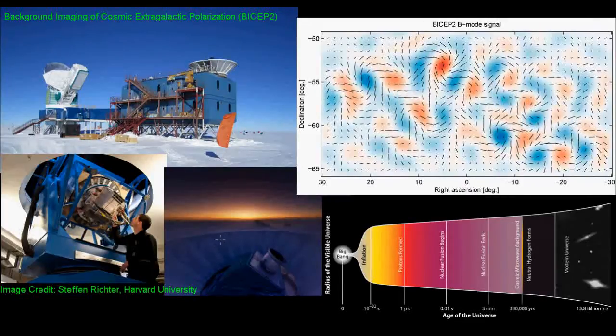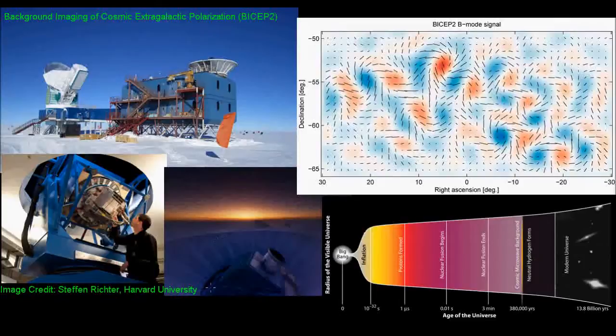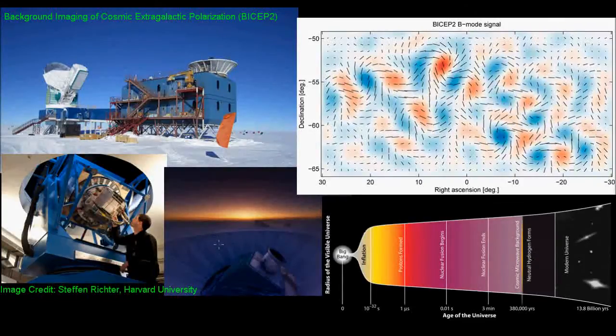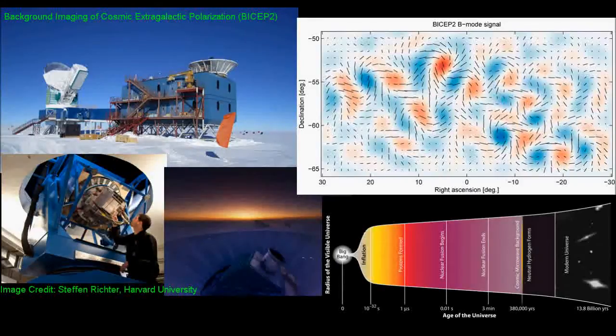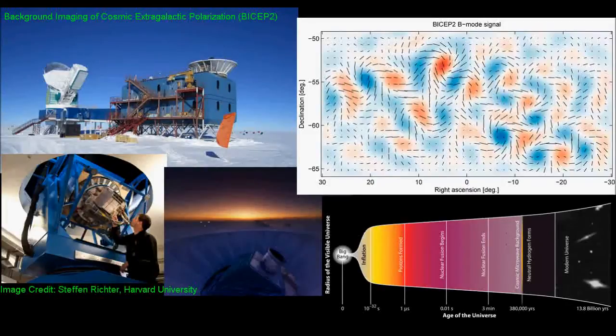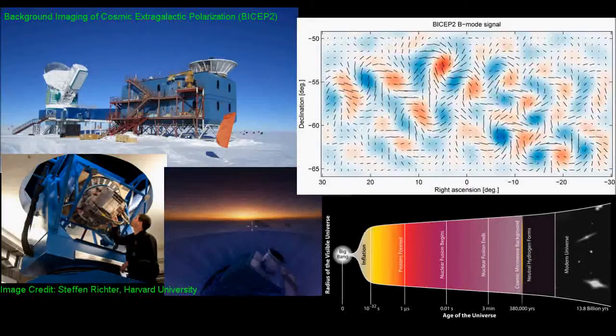So between 2010 and 2012, this instrument scanned a relatively empty patch of sky. And they did this so that there was a minimal amount of light from other sources like our own galaxy or nearby clusters of galaxies. We just wanted to see the light from the cosmic microwave background. And they measured the net polarization from each tiny patch of sky.